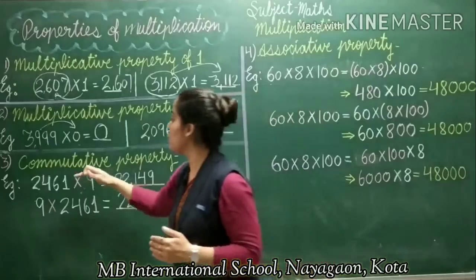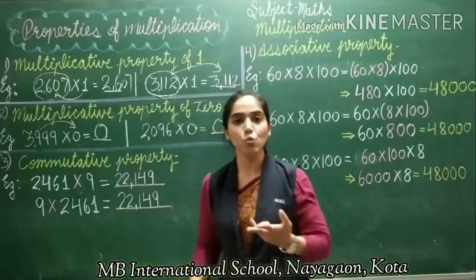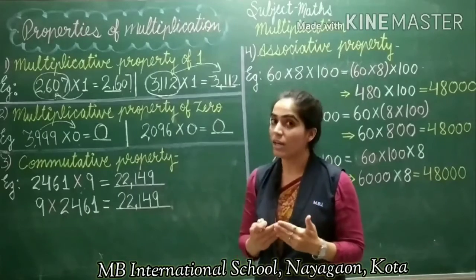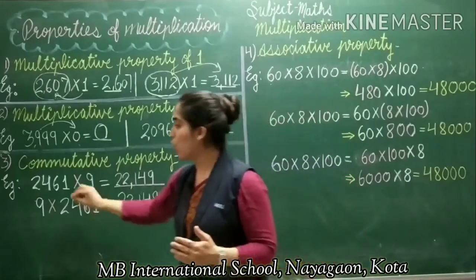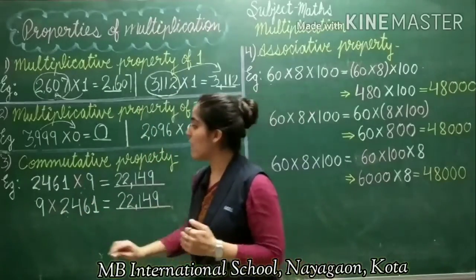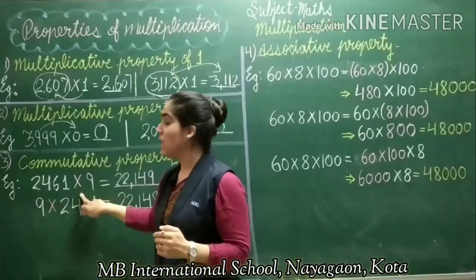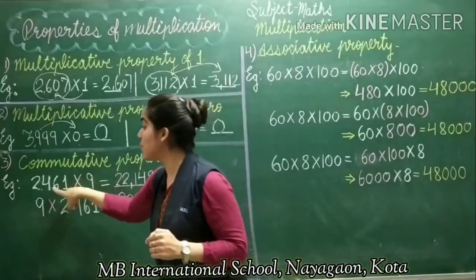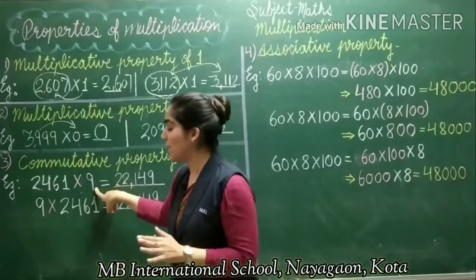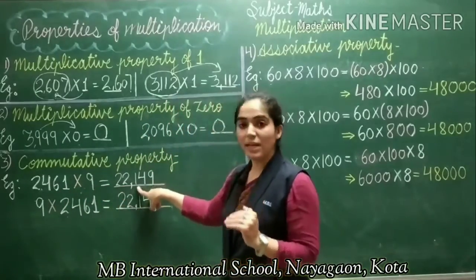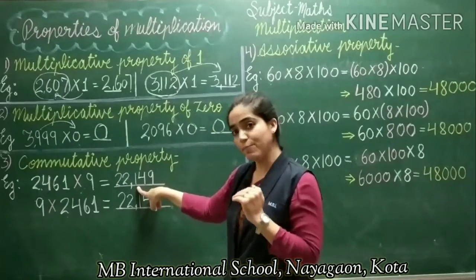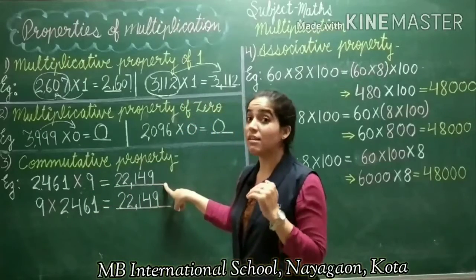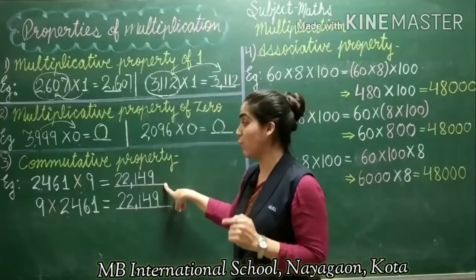The next property is commutative property. This property is applied on 2 numbers. Whenever we are going to multiply 2 numbers and we change the order, after changing the order also, we get the same product. I have taken here 2 numbers: the first number is 2,461 and the second number is 9. After multiplying both the numbers, I got the product 22,149.